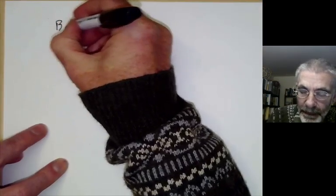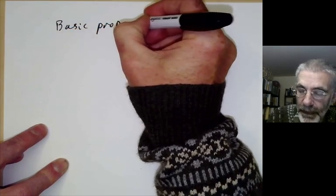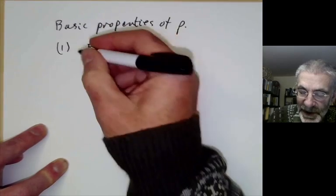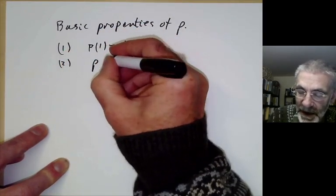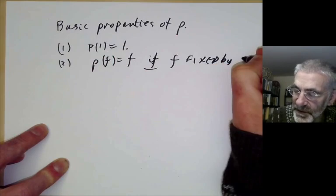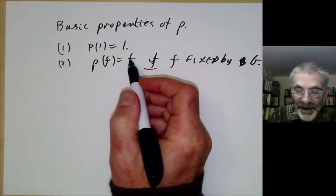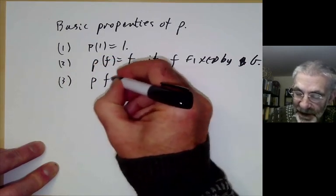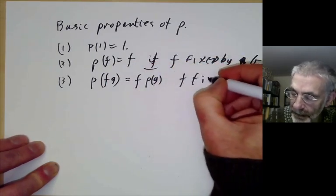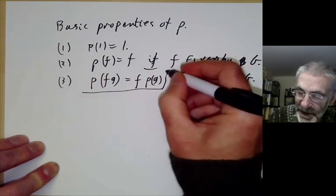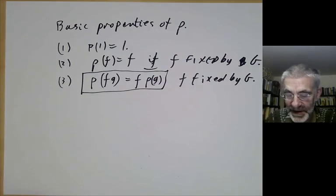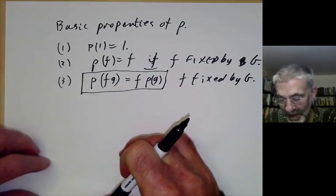The basic properties of ρ are: first, ρ(1) = 1; more generally, ρ(f) = f if f is fixed by G, since we're just averaging f; and crucially, ρ(fg) = f·ρ(g) whenever f is fixed by G. These last two properties — together with ρ(1) = 1 ensuring the operator isn't identically zero — are the key properties we need.